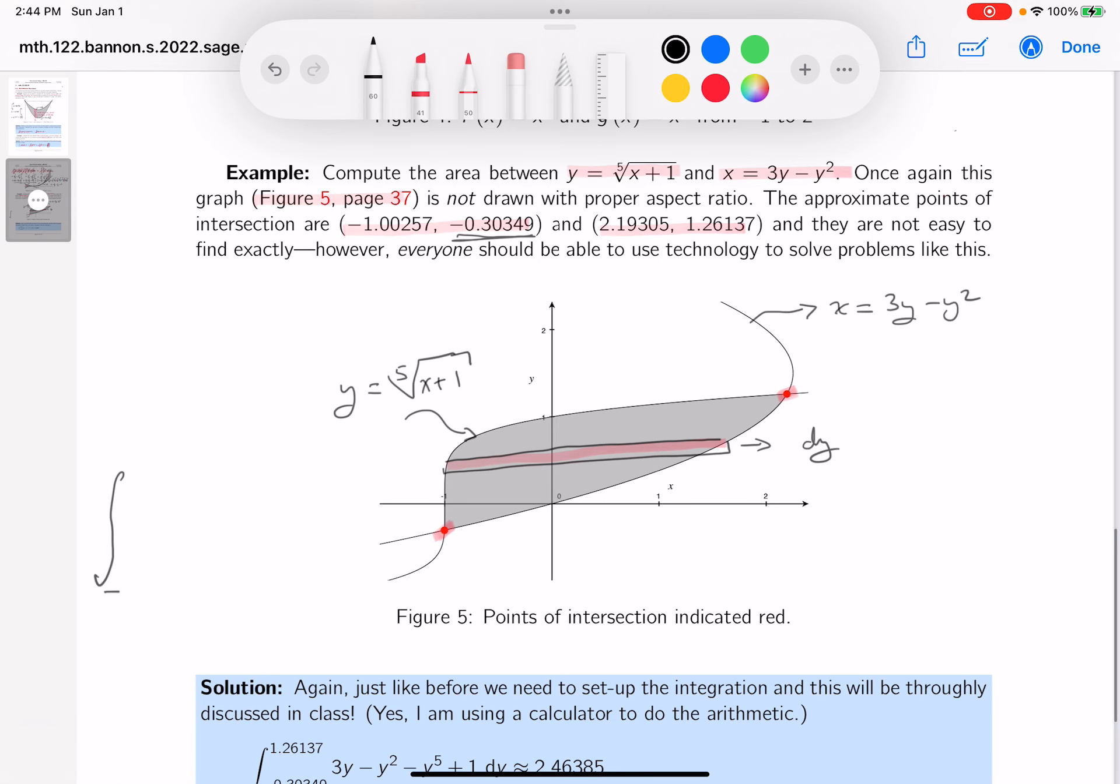I'll put this over here. So minus 0.3049, and the upper y is this number over here, which is 1.26, we'll look at the key later, 1.37. And the differential, again, we're going with the y's is dy.